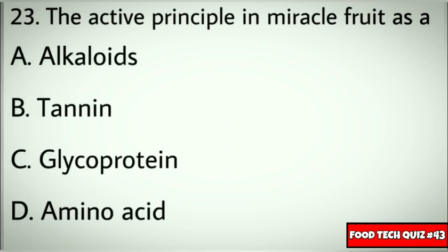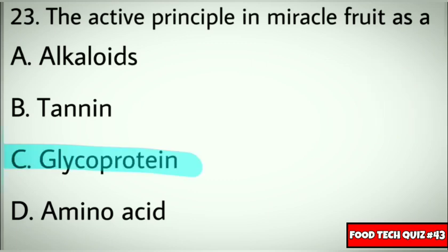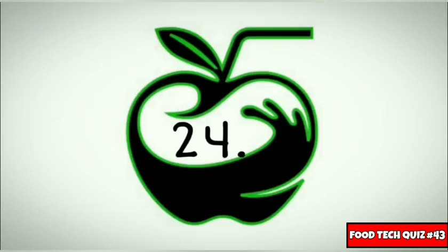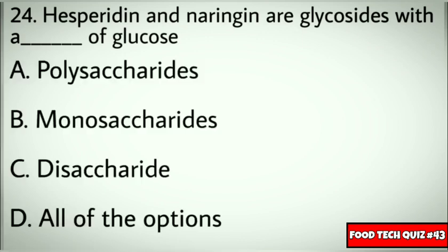Question number 23: The active principle in miracle fruit is? Options: A) Alkaloids, B) Tannin, C) Glycoprotein, D) Amino acid. Correct answer: C) Glycoprotein. Question number 24: Hesperidine and naringin are glycosides with a dash of glucose. Options: A) Polysaccharides, B) Monosaccharides, C) Disaccharides, D) All of the options. Correct answer: C) Disaccharide.